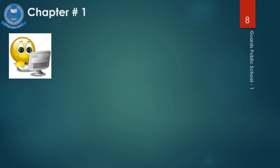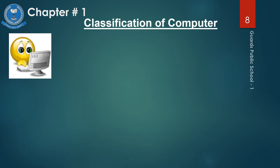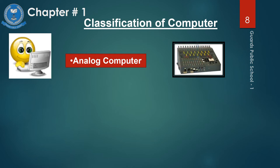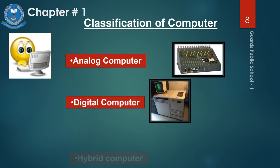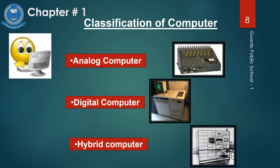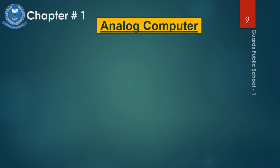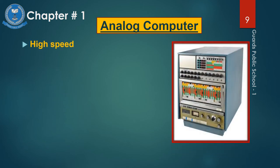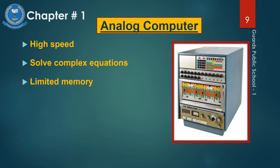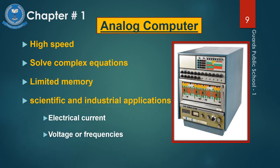Now we discuss about the classification of computer: analog computer, digital computer, and hybrid computer. The analog computer has high speed and solves most complex equations in a second. It has limited memory but high speed and performs certain types of calculations. It is mainly used in scientific and engineering calculations.